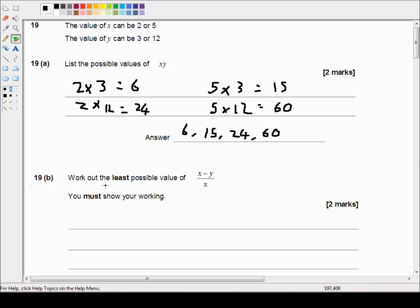Okay, part b says work out the least possible value for x minus y over x. You must show your working.